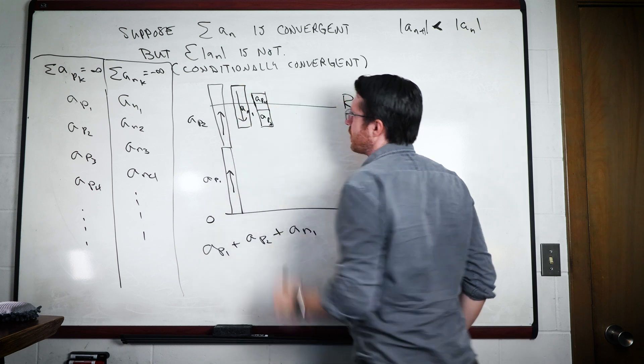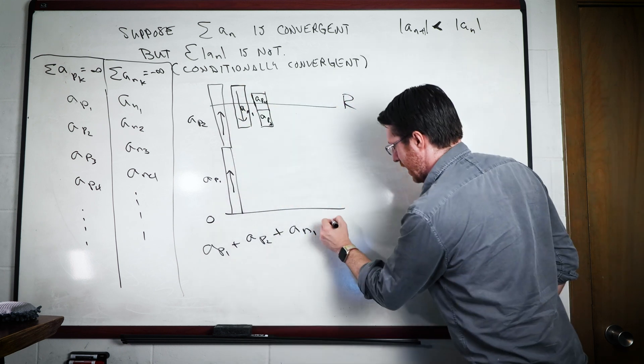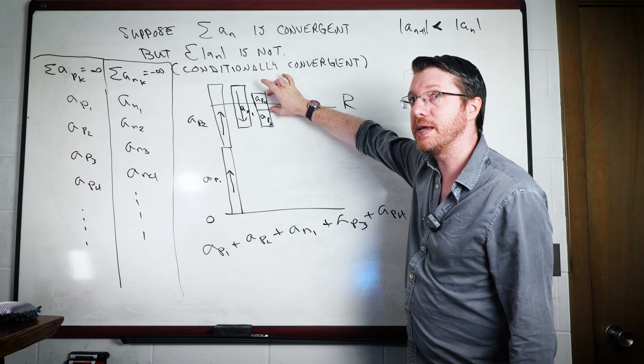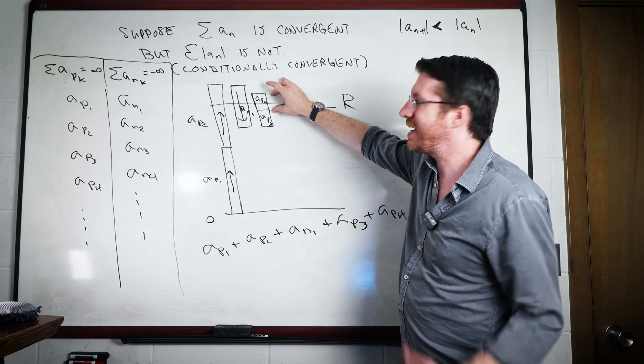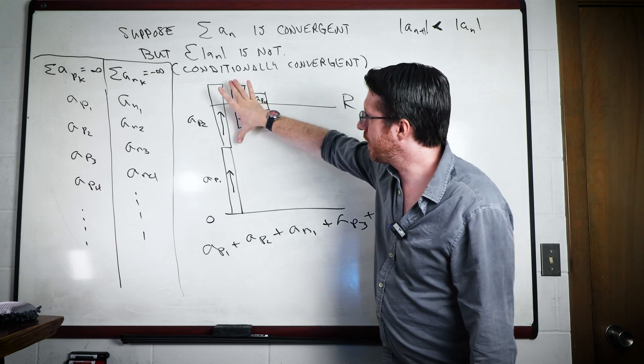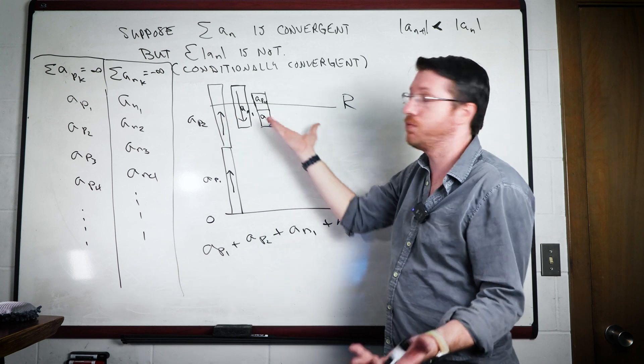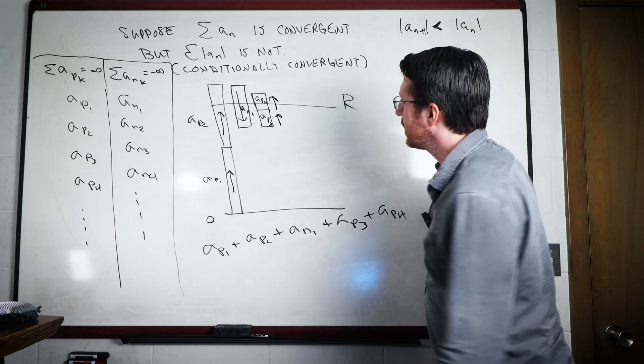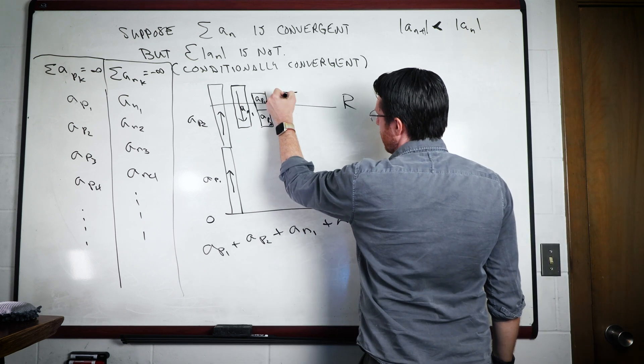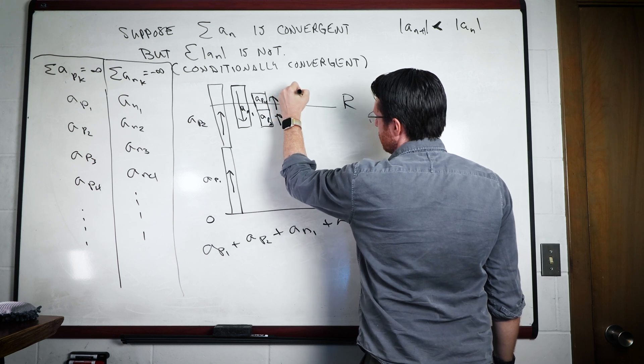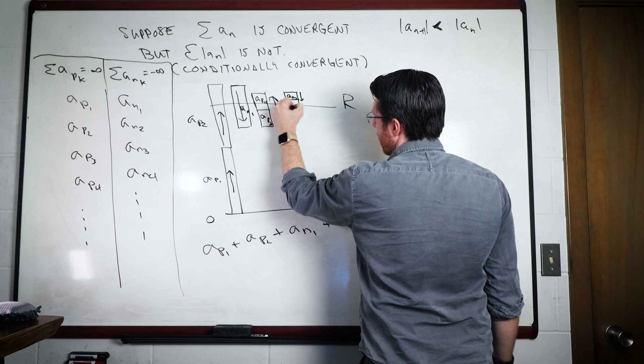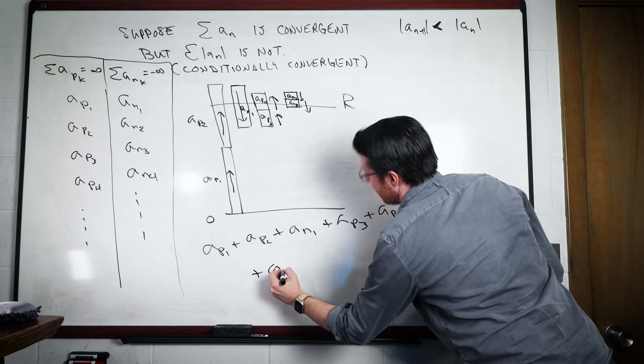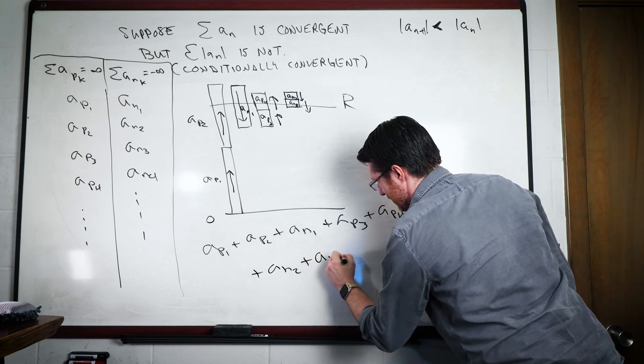Now how far away this new sum is when we add a_p_3 plus a_p_4, how far away we are, it can't be any more than this small term here. And so what we know is that our refinement, we have a guarantee that at least we're going to be closer to r than the guarantee we had over here. So we went up, and now we're going to go down again. It would be a_n_2 here, and then a_n_3 here. And so we went down, and we just continue.